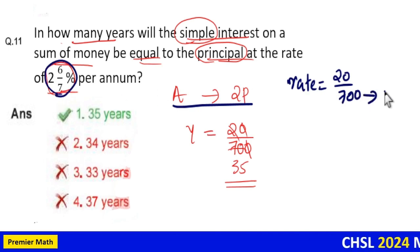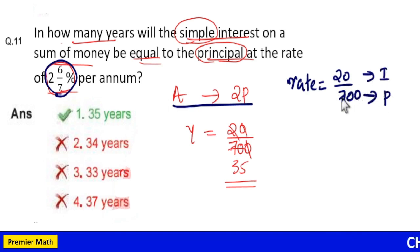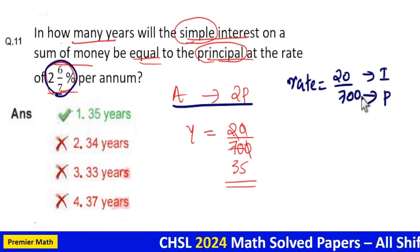Now this 700 part is the principal and this 20 part is the interest generated out of the 700 part in one year.